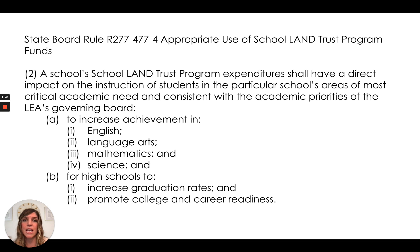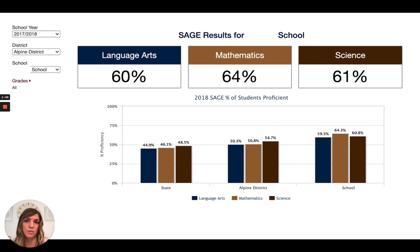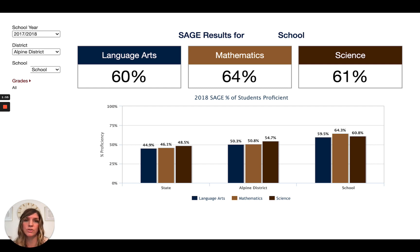So again, what information can we use to know how we're doing? State assessment can still be used. Acadians happened last year, just not end-of-the-year scores, and Acadians is happening this year again for our elementary schools. That, coupled with previous year's data, could be a good data point for these plans.